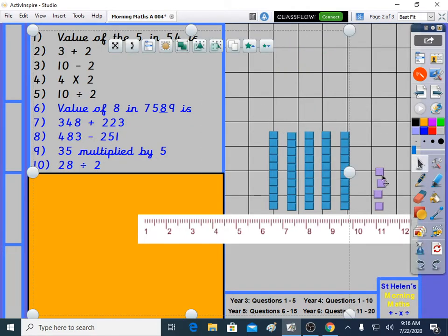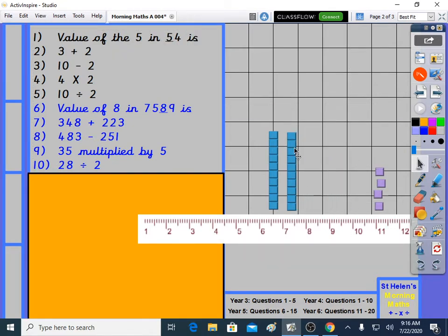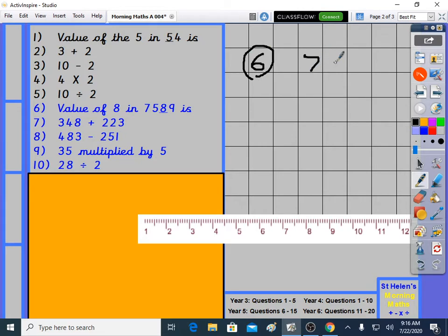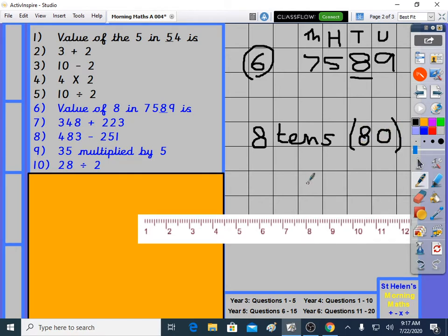We're on question 6. The value of the 8 in 7,589. So you'll put your hats on. Units, tens, hundreds, thousands. They want to know what the 8 is worth. And it's worth 80. 8 tens. Because it's in the tens column. And it's literally 8T. 80. That's why we call it 80.